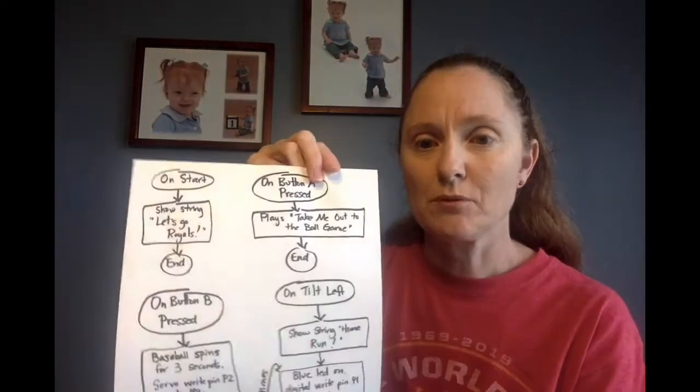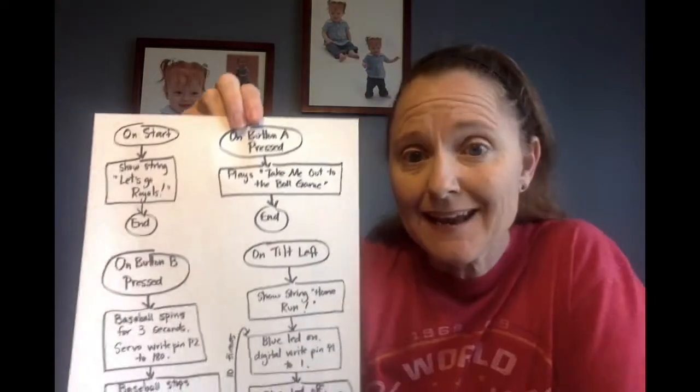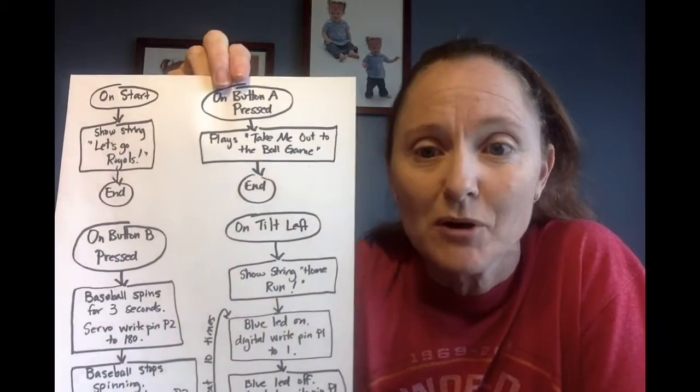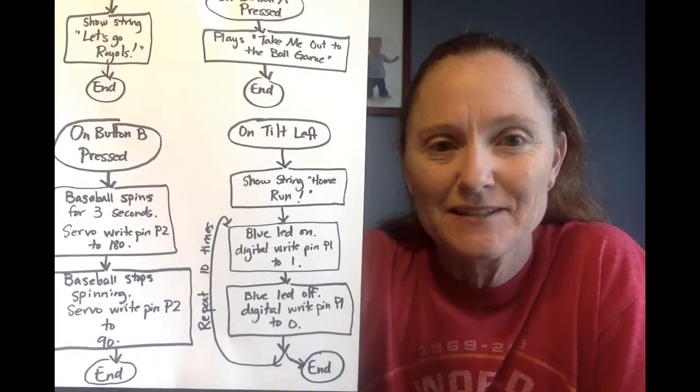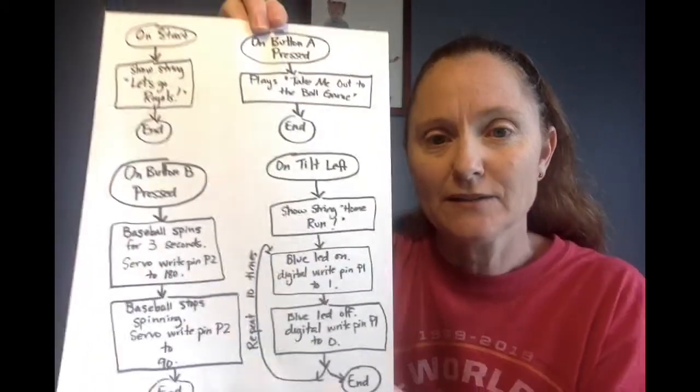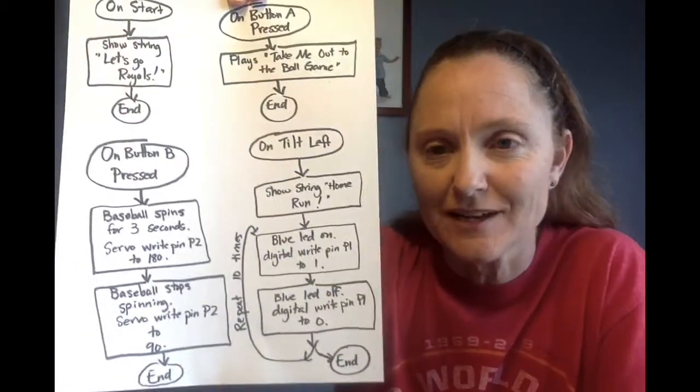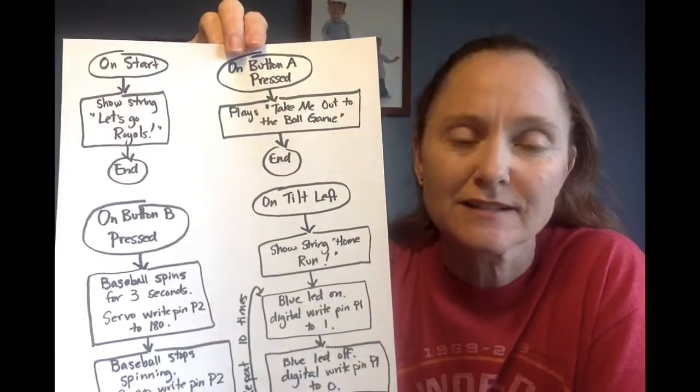For the second part of your project, I want you to plan out what your card will do when you press buttons. For example, on mine: when I press button A it's going to play the song Take Me Out to the Ball Game; when I press button B it's going to spin a servo with a baseball on it; when I tilt the card left it's going to flash a light; and on start it's just going to say Let's Go Royals. It could be scrolling words, flashing lights, spinning a servo, playing a song, or showing icons.